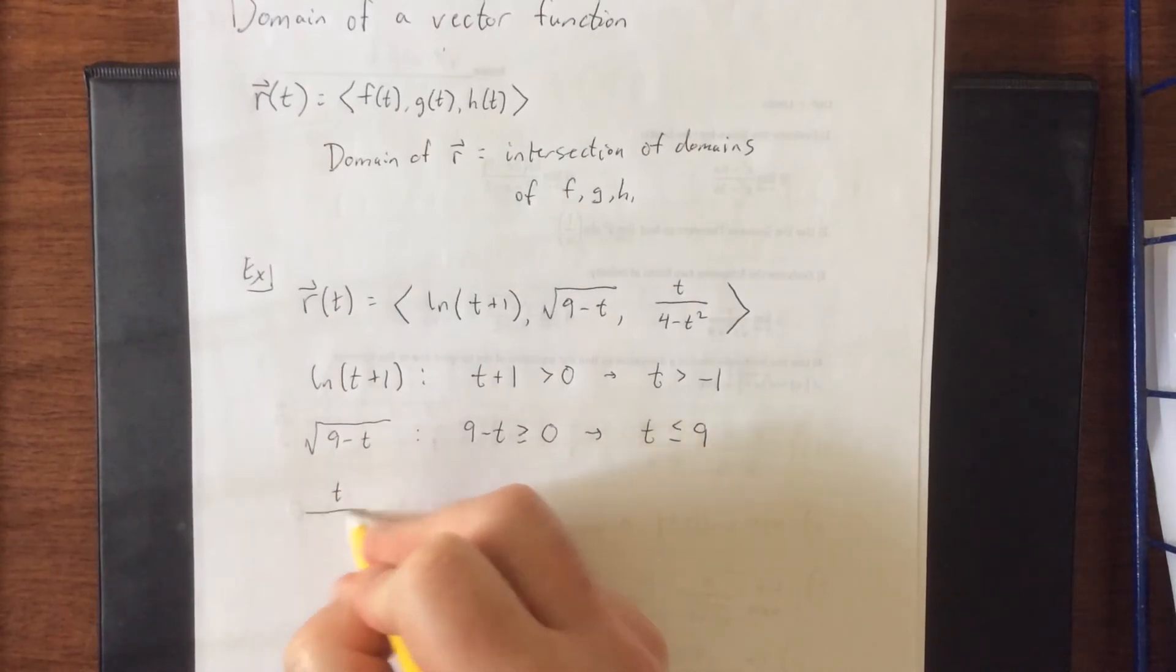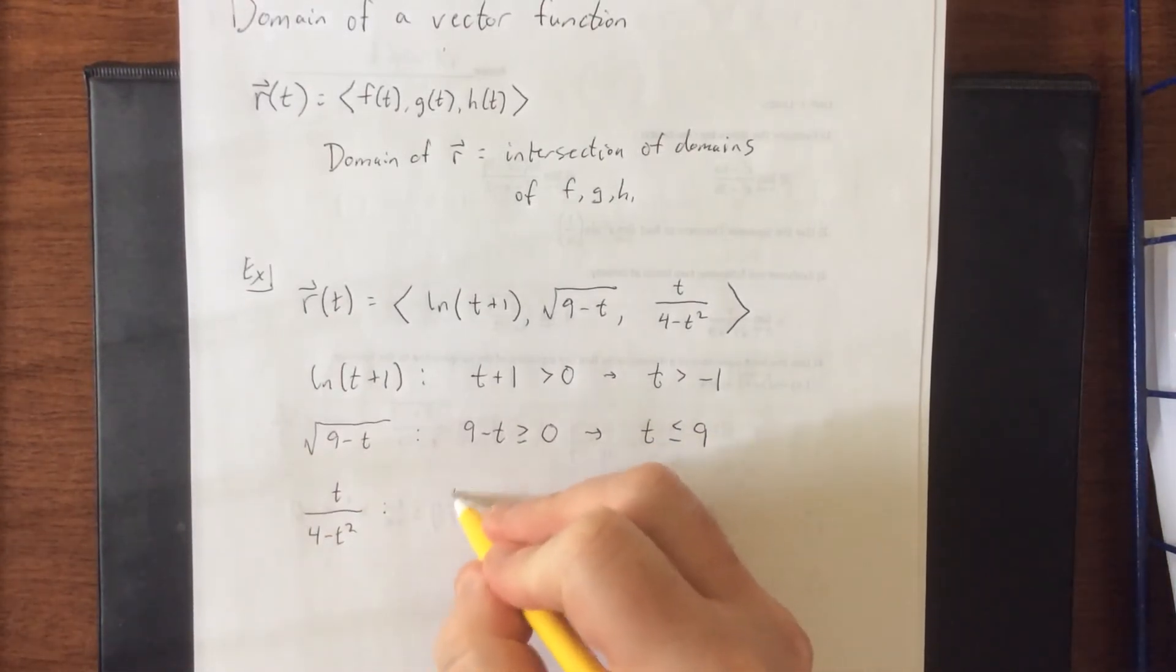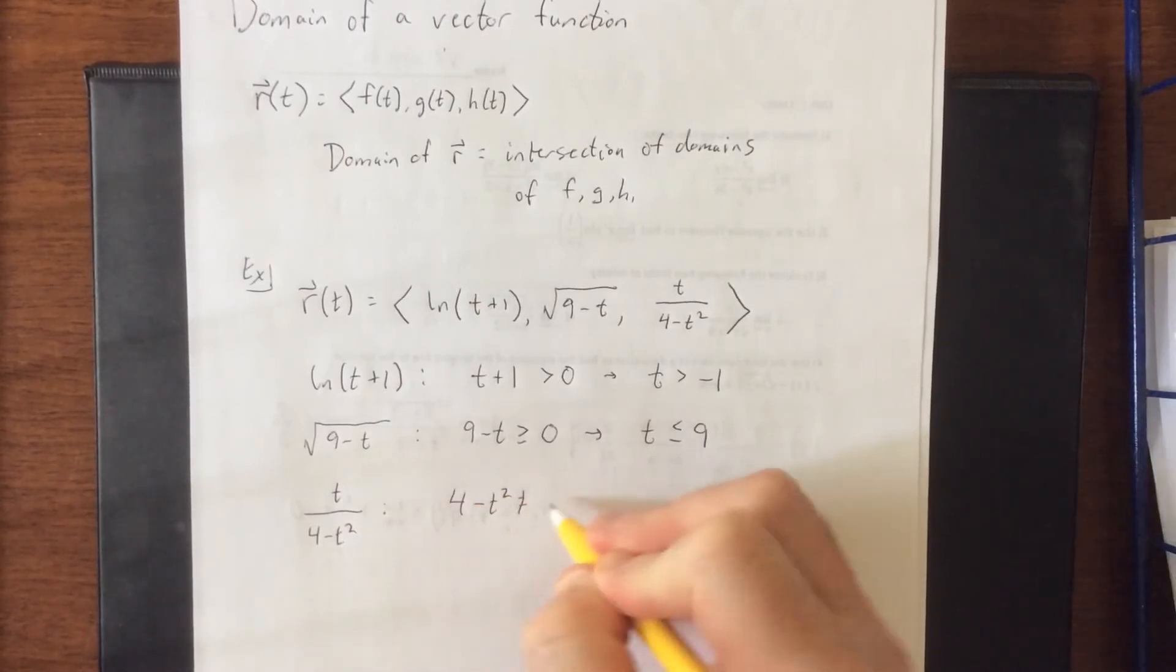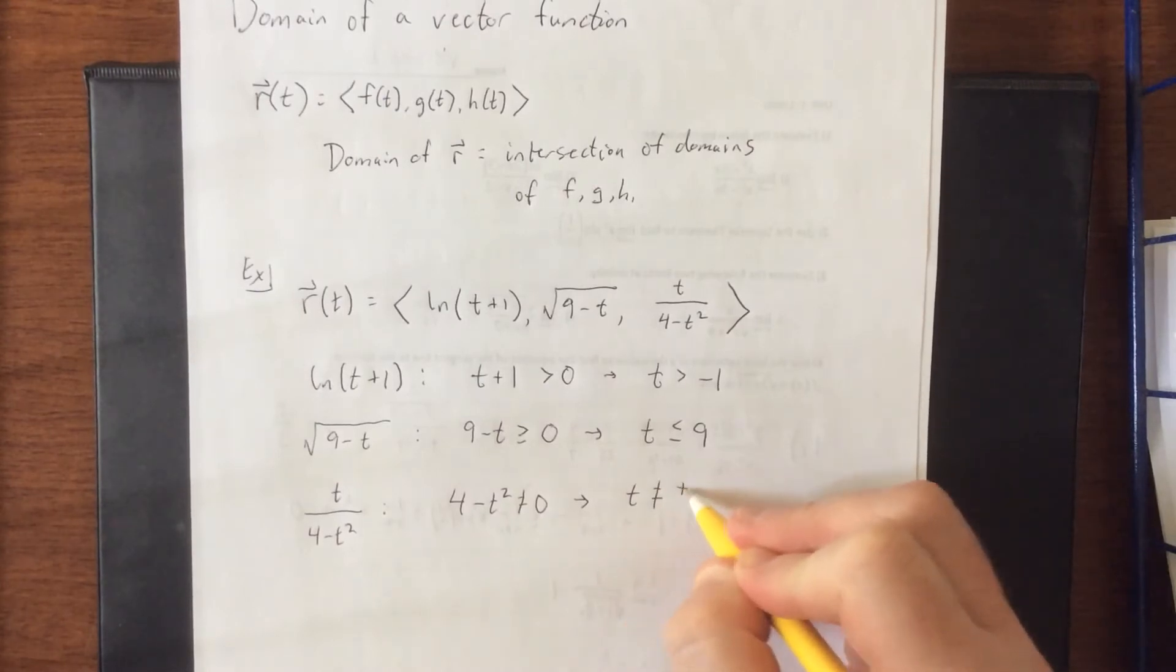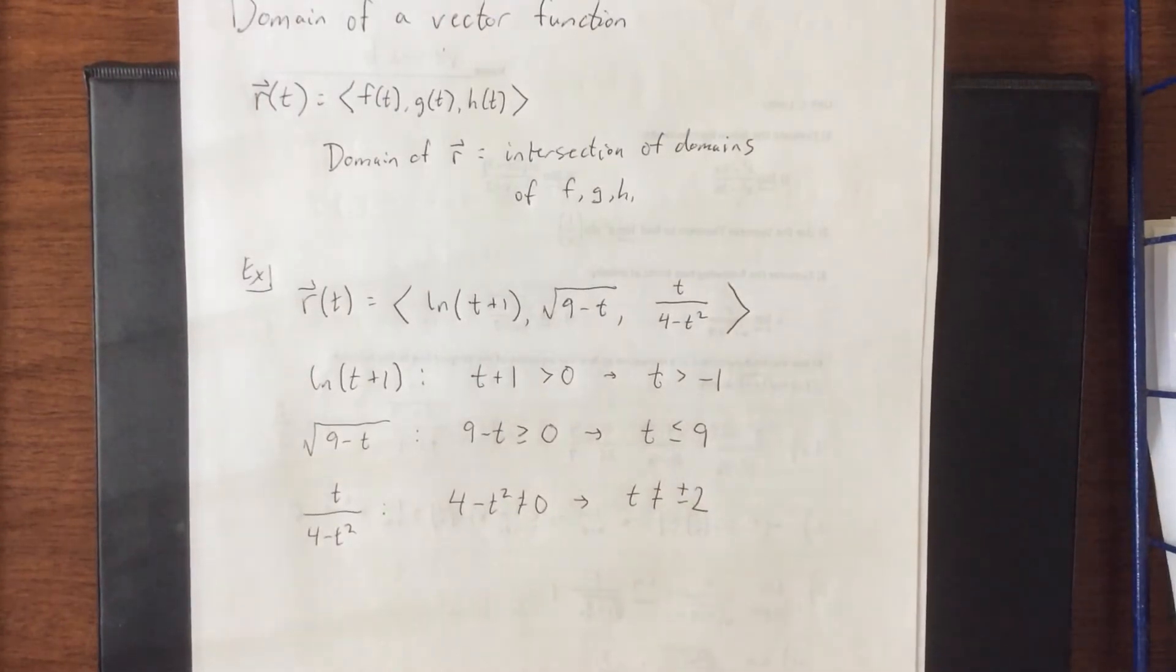And finally, when we have a denominator, it is necessary that whatever's in the denominator cannot be equal to 0, which lets us know that t cannot be equal to either positive 2 or negative 2.